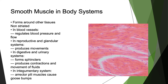Moving into smooth muscles of the body, these form around other tissues. Smooth muscles are non-striated. In blood vessels, they help to regulate blood flow and pressure. In the reproductive and glandular systems, they help to produce movements. In the digestive and urinary systems, they help to form sphincters and produce contractions and movement of fluid. In the integumentary system, the erector pili muscle causes goosebumps and causes hairs to stand on end.